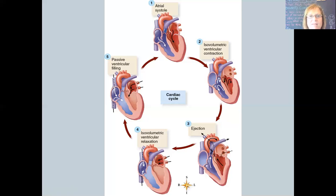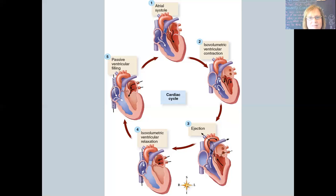Let's look at the slide on the screen — it's a depiction of five different phases that give you insight into the cardiac cycle. Starting at number one at the top, we see atrial systole. I'll remind you how we define systole and diastole: systole is the active part from a muscular point of view — when that heart muscle is contracting. Diastole is the relaxation phase, when the muscle is relaxing.